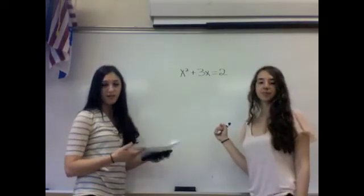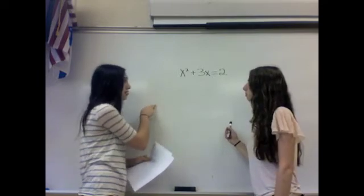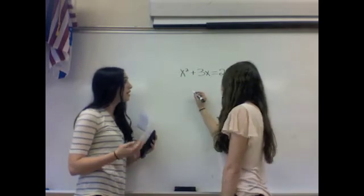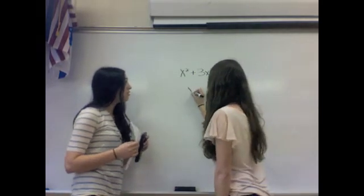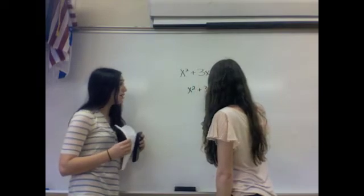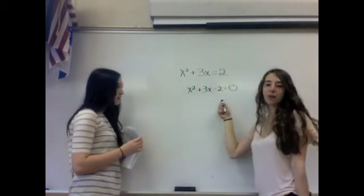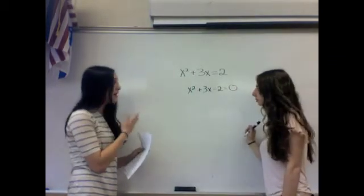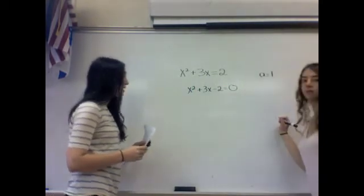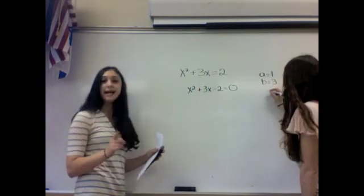Now I'll teach you how to solve a problem in a slightly different form. Say we have X squared plus 3X equals 2. You might not be able to see your A, B, and C immediately, but if you rearrange and subtract 2, you'll get X squared plus 3X minus 2 equals 0, which is standard form. Now you can identify: A is 1, B is 3, and C is negative 2.